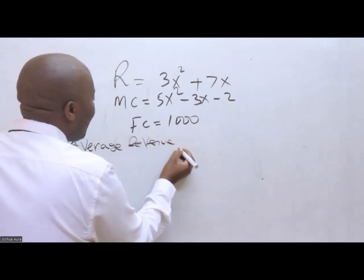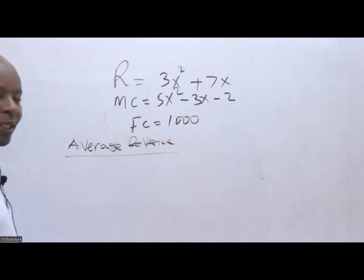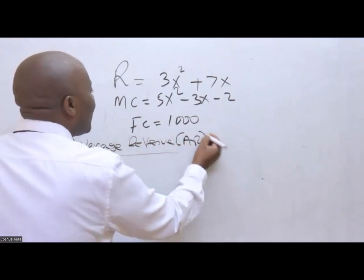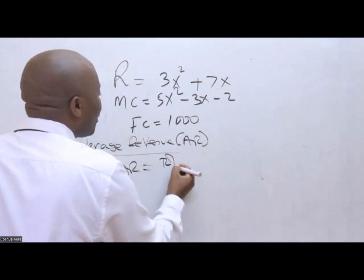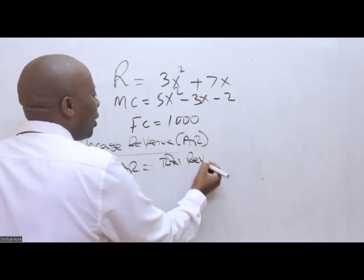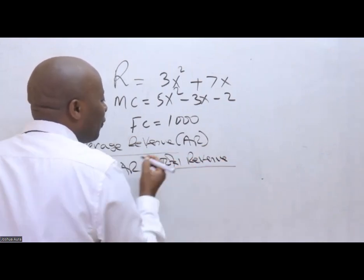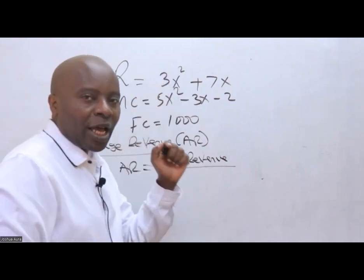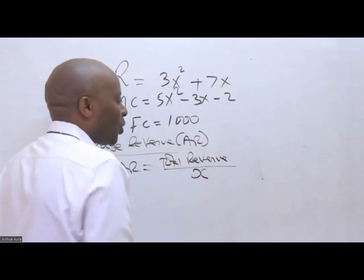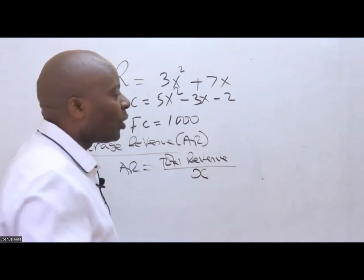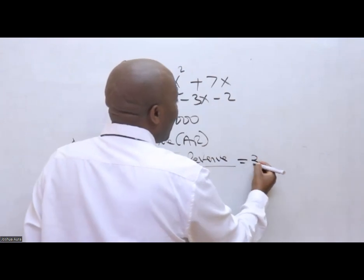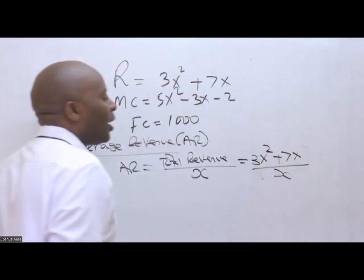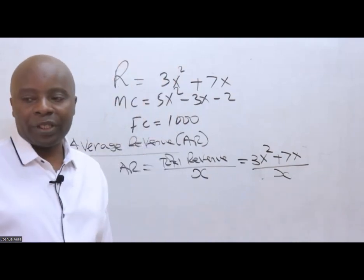Average revenue is the same as revenue per unit. To get average revenue, abbreviated as AR, you will take total revenue and divide this by total quantity. The quantity in this case is abbreviated using x. So I will take my total revenue here, which is 3x squared plus 7x, and then divide everything by x.